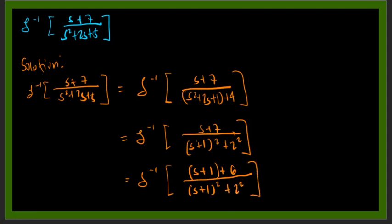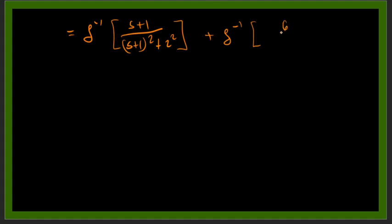If we are going to separate that one, we have inverse Laplace of s plus 1 over s plus 1 squared plus 2 squared, plus inverse Laplace of 6 all over s plus 1 squared plus 2 squared.